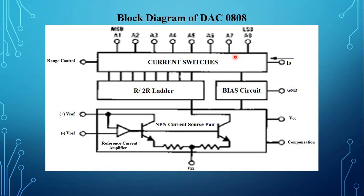DAC 0808 has 8 input data lines: A1 is the MSB and A8 is the LSB, used to control the position of the current switches. It requires 2 milliamps reference current for full scale input and two power supplies: VCC = +5 volts and VEE, which may range from minus 5 volts to minus 15 volts.